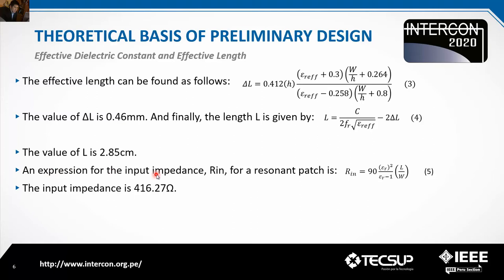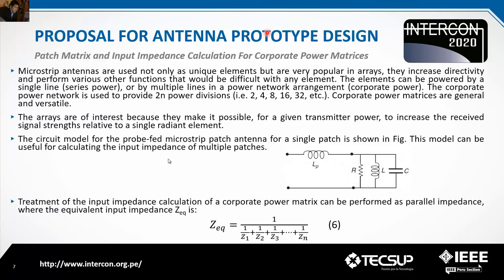An expression for the input impedance R_IN for a resonant patch is as follows. R_IN is based on the dielectric constant, length, and width. So the input impedance is 416.27 ohms — for one patch only.